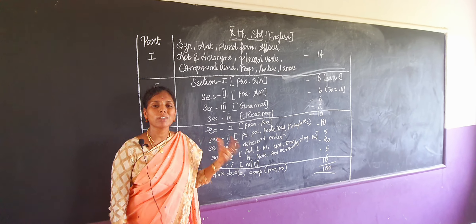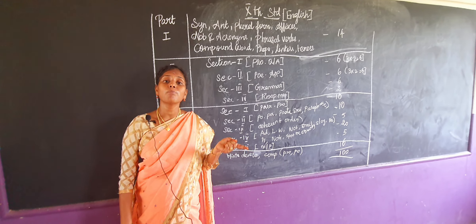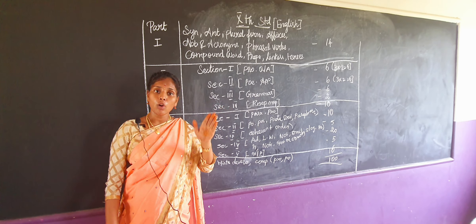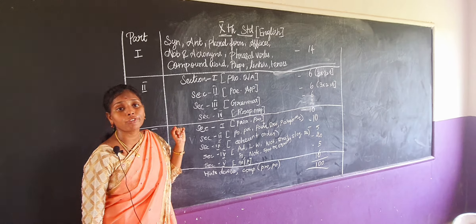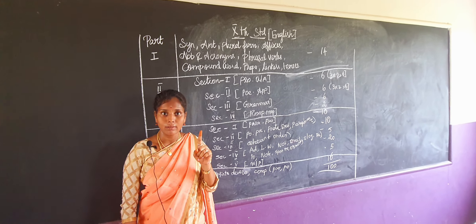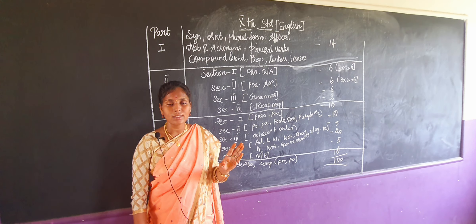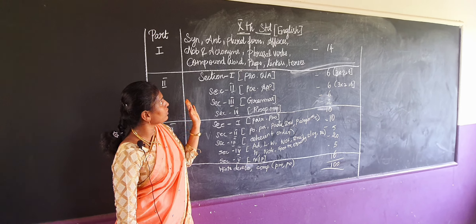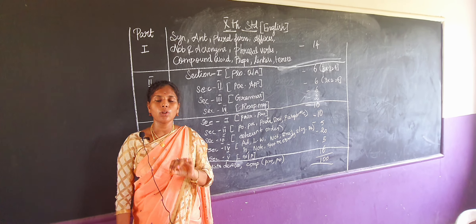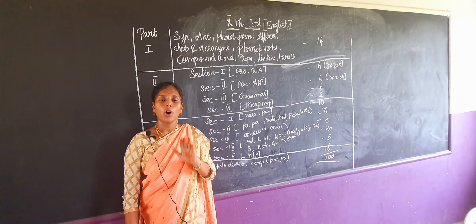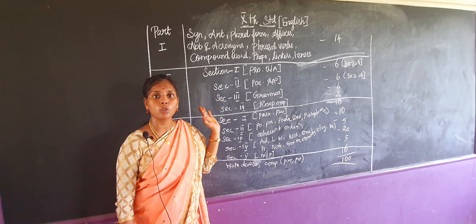Next is affixes — what is meant by affixes? Prefixes and suffixes. A prefix comes at the beginning of a word and a suffix comes at the ending of the word. Next is plural form — for example, 'boy' is one, but more than one is 'boys'; that we call plural form. Next is abbreviations and acronyms — for example, WHO stands for World Health Organization, CPU stands for Central Processing Unit. Learn all these abbreviations and acronyms; don't worry, they will give options.